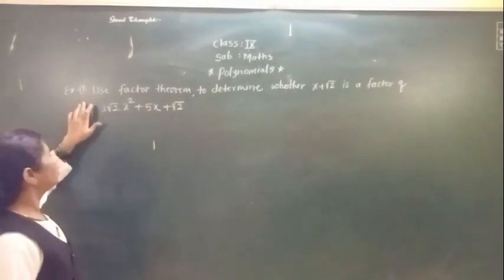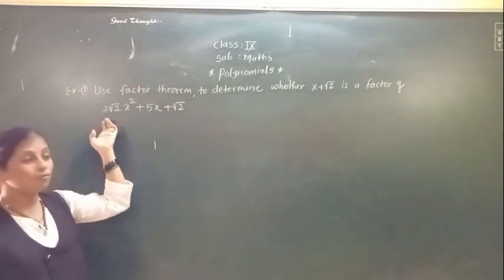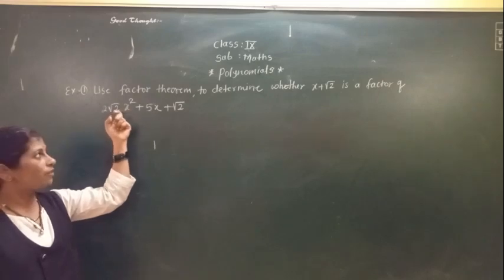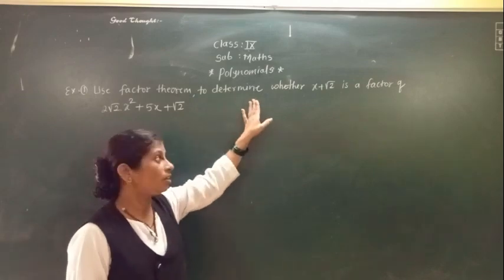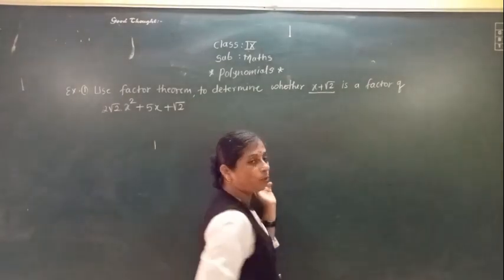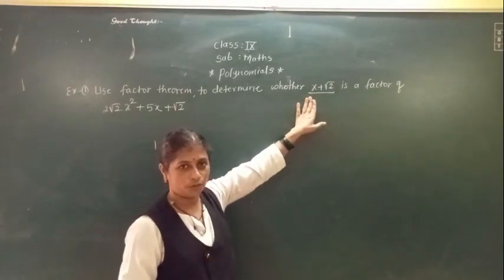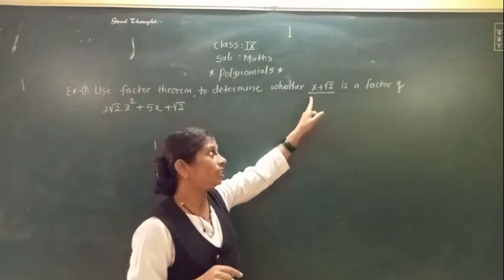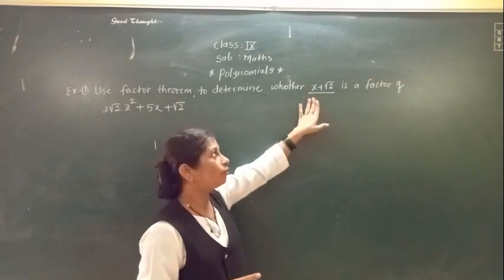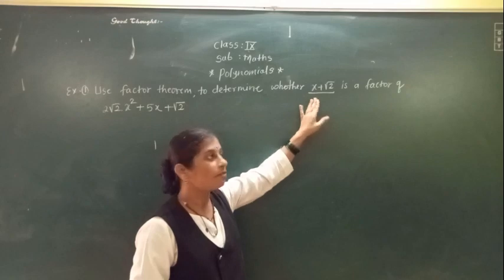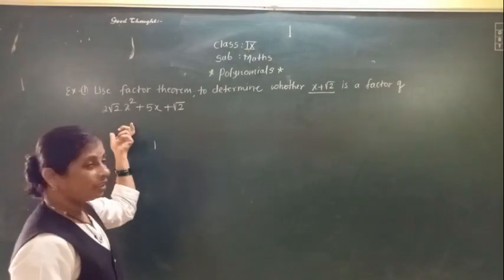First example: Use the Factor Theorem to determine whether (x + √2) is a factor of the polynomial 2√2x² + 5x + √2. In this example, it is not stated that it is a factor — we have to check whether it is a factor of the given polynomial, yes or no.